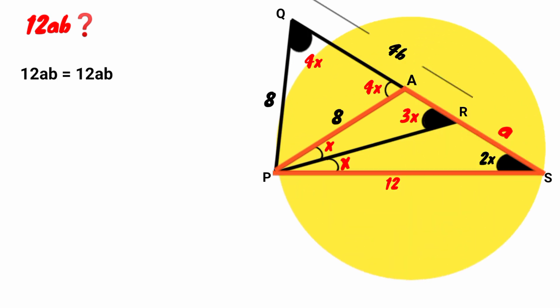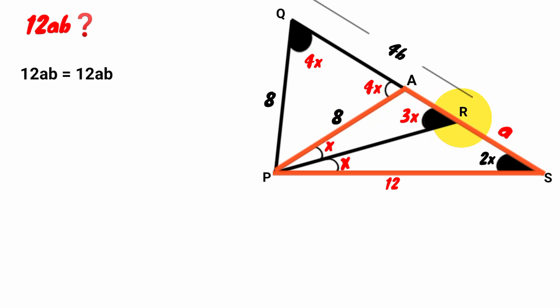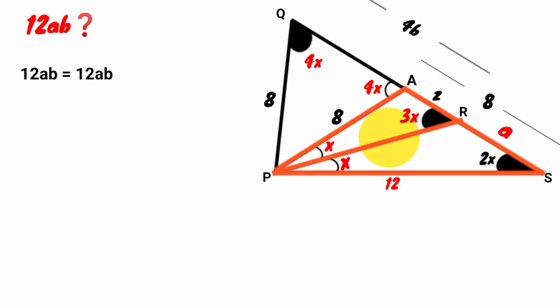The same goes for triangle APS — this angle has size 2x and this also has size 2x, which implies it is an isosceles triangle. So the sides facing the base angles are also equal in length, and the length of this side will also be 8 units. Assume the length of this little line segment to be Z.